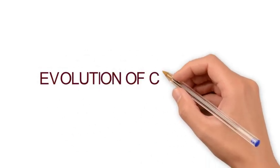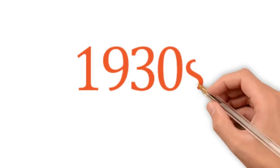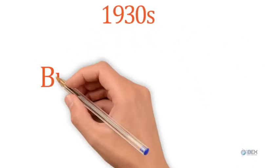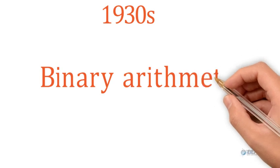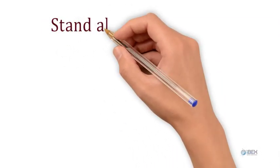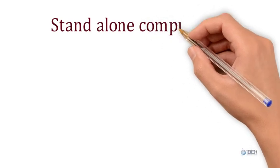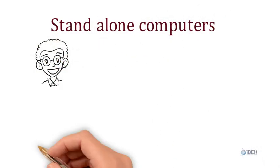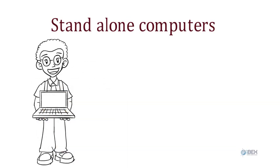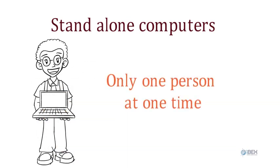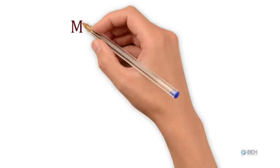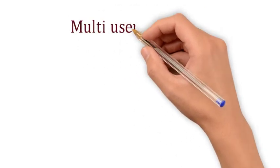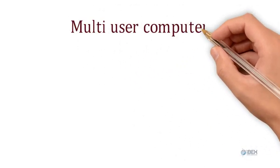Evolution of Computer and Banking: The evolution of computers started way back in the late 1930s. Binary arithmetic is at the core of computers of all times. The evolution started with standalone computers — where only one person works on a computer and their work is known to nobody else — and slowly progressed to multi-user computer systems, where several people can work at the same time on a centralized processing concept.